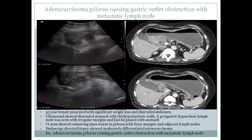A 55-year-old male patient presented with significant weight loss and distended abdomen. Ultrasound showed a distended stomach with thickened pyloric walls and abnormal gastric mucosa with loss of normal fat planes. CT scan showed an enhancing mass with spiculated margins. Endoscopy-directed biopsy showed adenocarcinoma, and this patient presented with gastric outlet obstruction and metastatic lymph nodes.